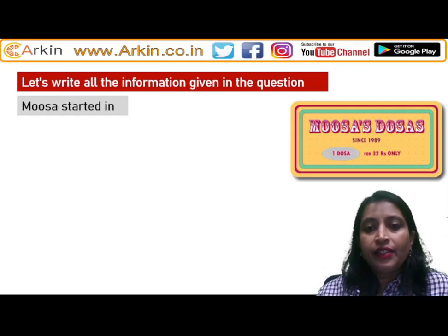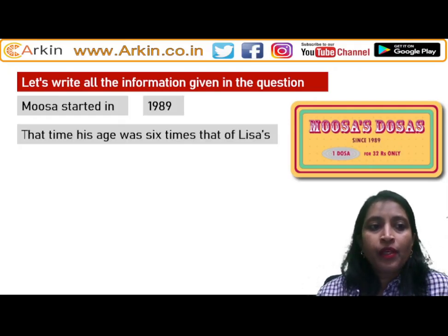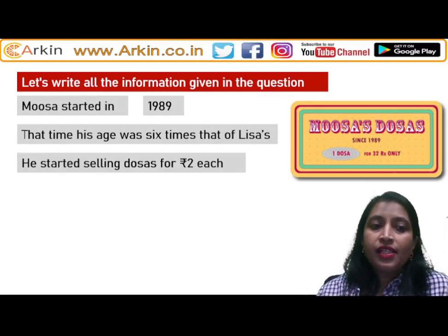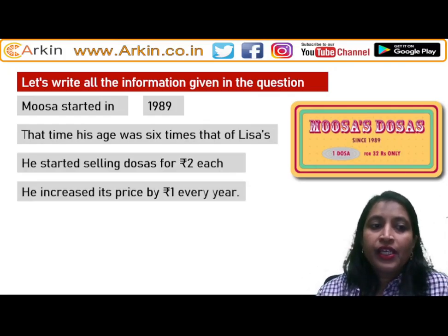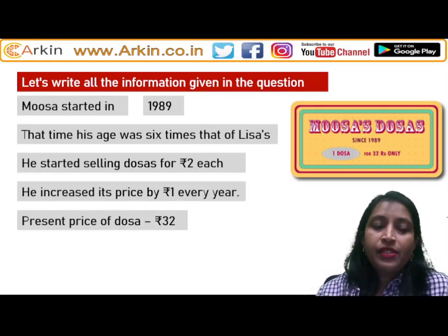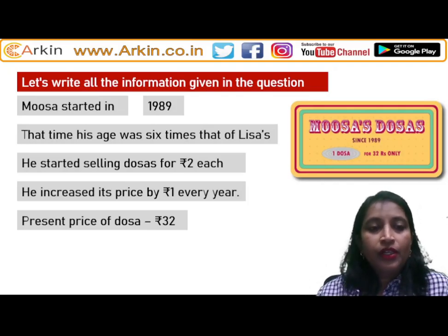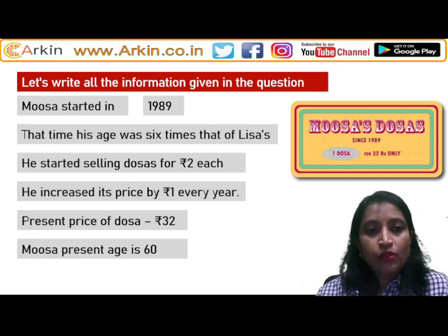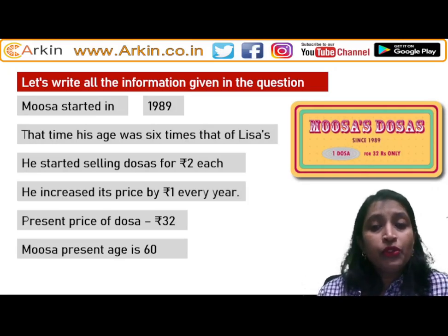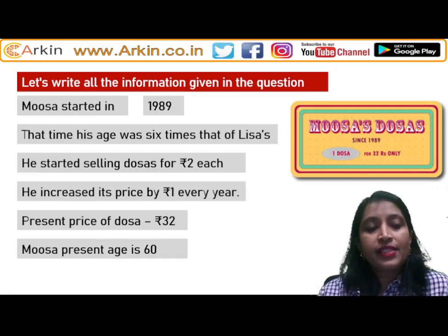Musa started in 1989, as shown on the board. At that time, his age was six times that of Lisa's. He started selling dosas for rupees 2, and he increased his price by rupees 1 every year. The present price of a dosa is 32 rupees. Also given is that Musa's present age is 60.